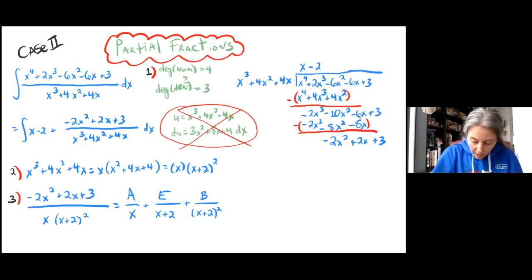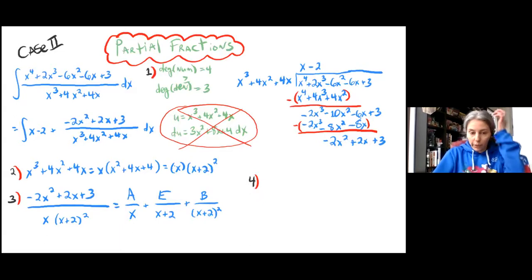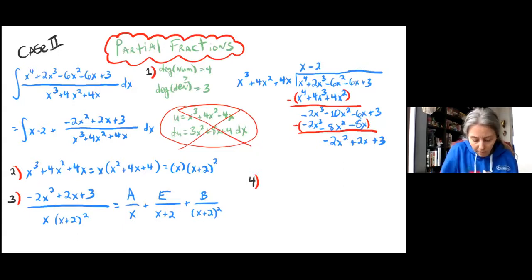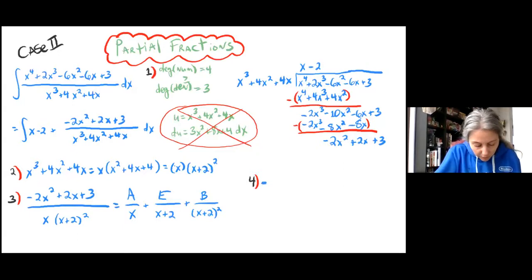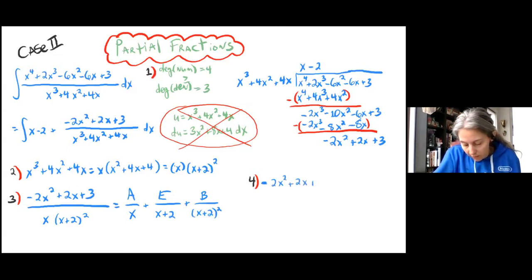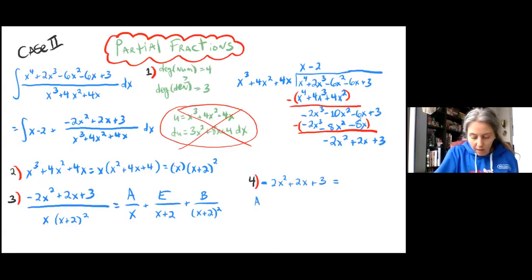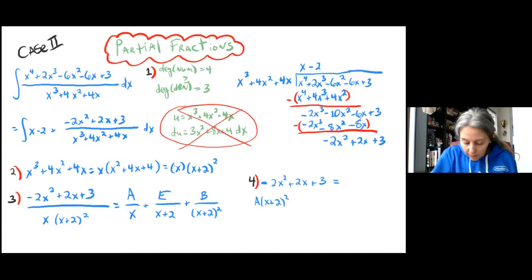Step four is to solve for the numerators. We take x times (x plus 2) squared and multiply both sides by it. We end up with: negative 2x squared plus 2x plus 3 equals A times (x plus 2) squared — the x's cancel out — plus E times x.